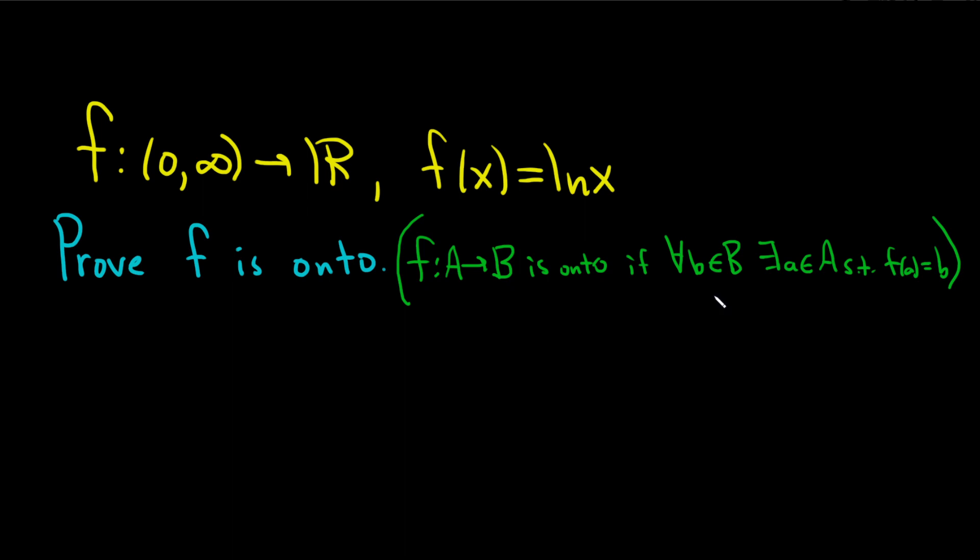So we need to figure out this proof, so let's work backwards. This will be our scratch work. So we'll start our scratch work by taking an element little b in B, and then we need to find an A. And by the way, what's little b here? I should probably write that. That's a set of real numbers, and A is the positive numbers.